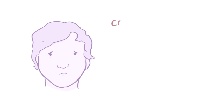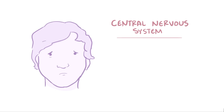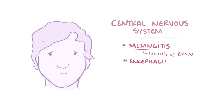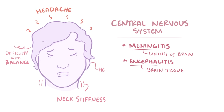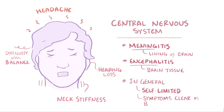Mumps also has an affinity for the central nervous system, and can cause meningitis, which is an infection of the lining of the brain, as well as encephalitis, infection of the brain tissue itself. These infections can cause symptoms ranging from those that feel like the common cold, like headache and neck stiffness, as well as more severe symptoms like difficulty with balance and hearing loss. In general, the infection is self-limited, and symptoms go away as the body recovers.